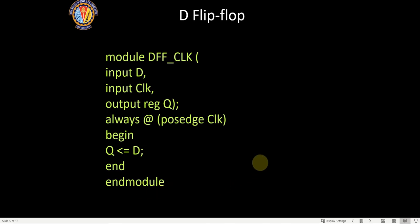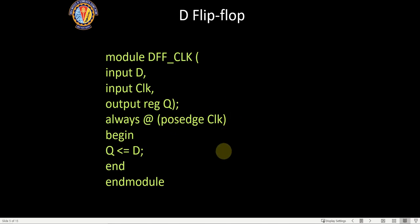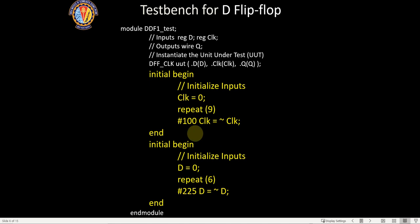The code for D flip-flop is simple: begin, and Q = D. Whatever is the value of D will get stored into Q during the positive edge of the clock. This is the simplest way of writing code for a D flip-flop. Now, for the test bench, you can't use the force constant method because you have to specify the clock, cycle, and frequency.